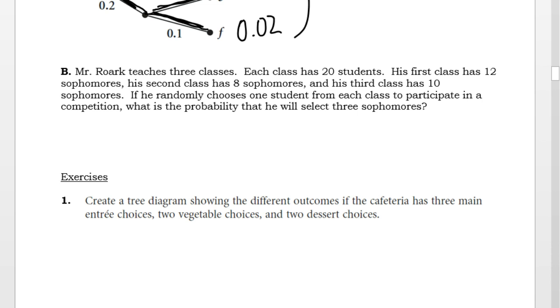If he randomly chooses one student from each class to participate in a competition, what is the probability that he will select 3 sophomores?